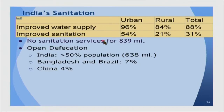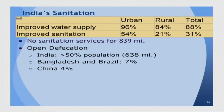India is probably the world capital for open defecation. Improved sanitation exists in only 54 percent of urban places and only 21 percent of rural places, meaning there are no adequate sanitation facilities for about 839 million people. You might say India is a poor country and cannot afford sanitation for everyone, but Bangladesh and Brazil are also poor, and they have open defecation rates of only 7 percent. China is at only 4 percent. There is really no justification for such a huge number in India.